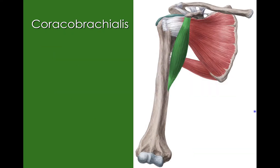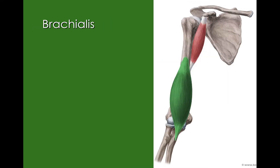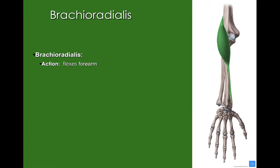Coracobrachialis — we can see our coracoid process and our humerus. This muscle is going to flex and adduct our arm. Our brachialis muscle helps to flex our forearm. Our brachioradialis, a little bit more distal on that humerus, flexes our forearm. These muscles are crossing that elbow joint and acting on that forearm. Take a few minutes and look over the muscles of the arm.